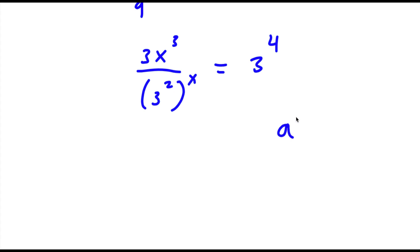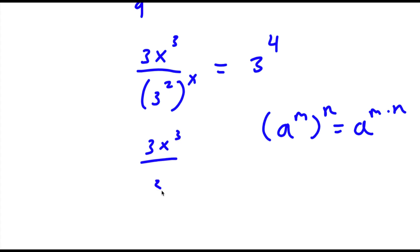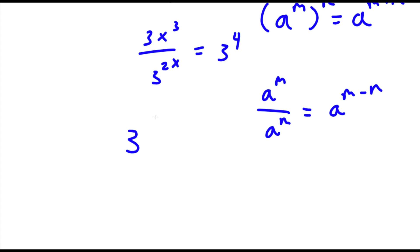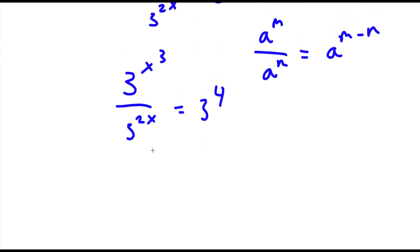Now, if I have something in the form a to the power of m to the power of n, this is equal to a to the power of m times n. And if I have something in the form a to the power of m over a to the power of n, this is equal to a to the power of m minus n. So in this case, I have 3 to the power of x to the power of 3 over 3 to the power of 2x, is equal to 3 to the power of 4. And this is going to equal 3 to the power of x cubed minus 2x, is equal to 3 to the power of 4.